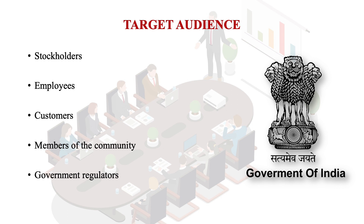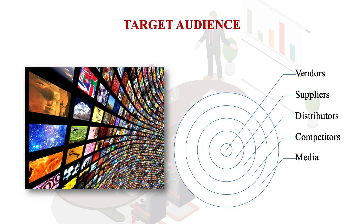We need to understand how this is done. Public relations practitioners have to communicate to different types of publics, and different types of messages are to be communicated to diverse publics. For example, if a politician wants to reach out to potential voters, he'll either organize a rally or use radio, TV, or newspapers. If an NGO wants to raise funds for poor children, the effective route to reach the target audience is publicity. They may organize a charity event or create an online platform.